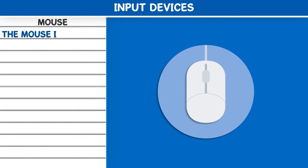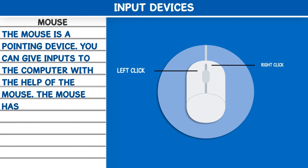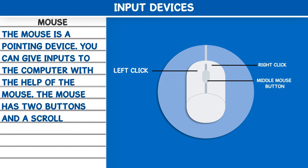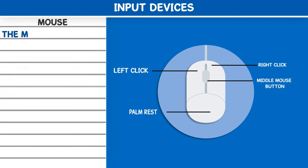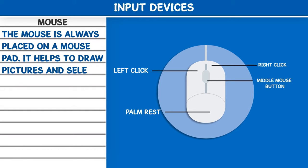Mouse: The mouse is a pointing device. You can give inputs to the computer with the help of the mouse. The mouse has two buttons and a scroll wheel. The mouse is always placed on a mouse pad. It helps to draw pictures and select files on the computer.